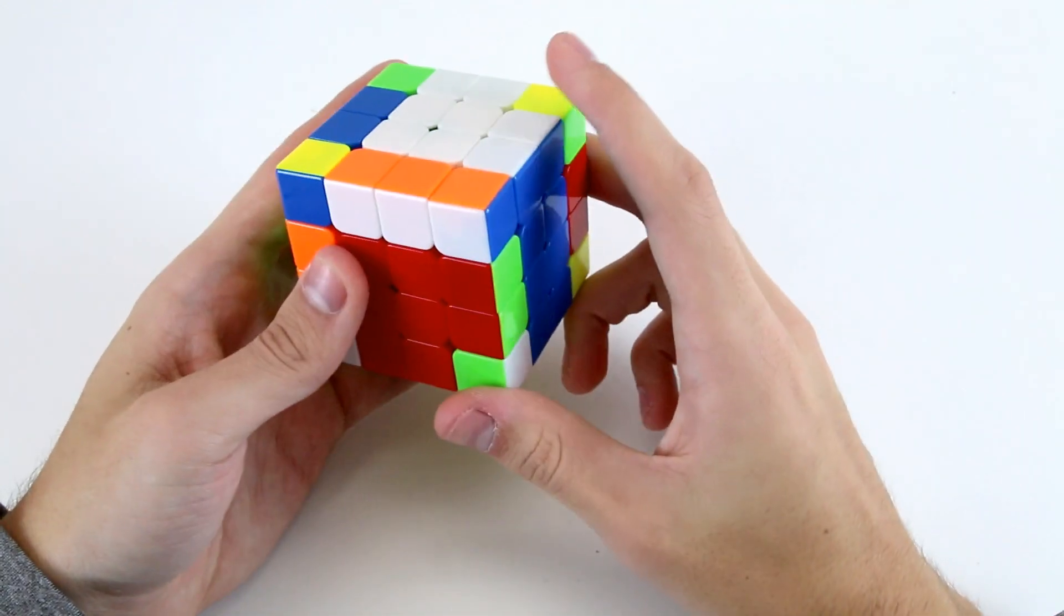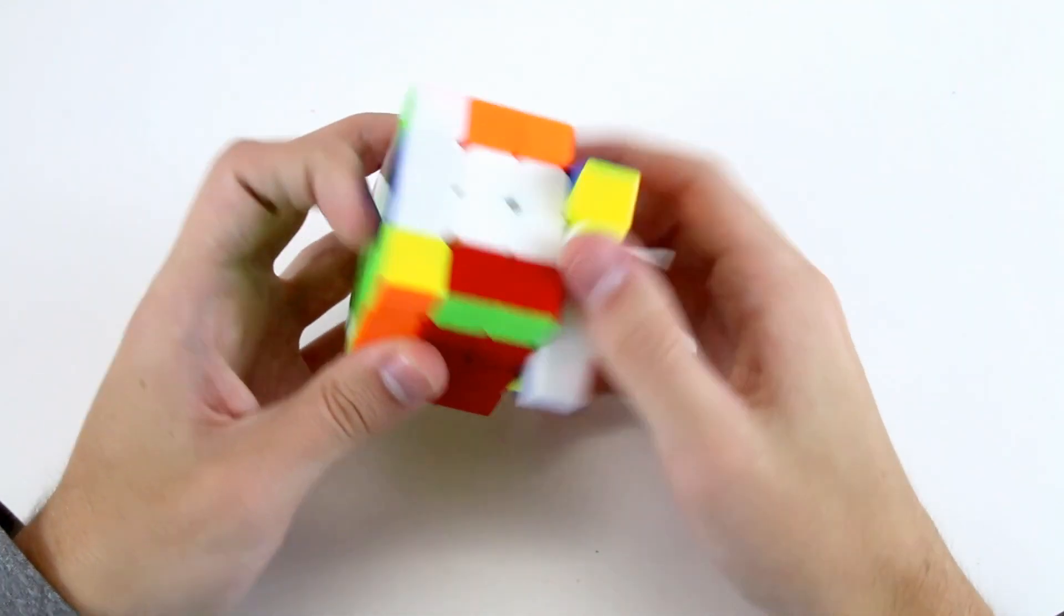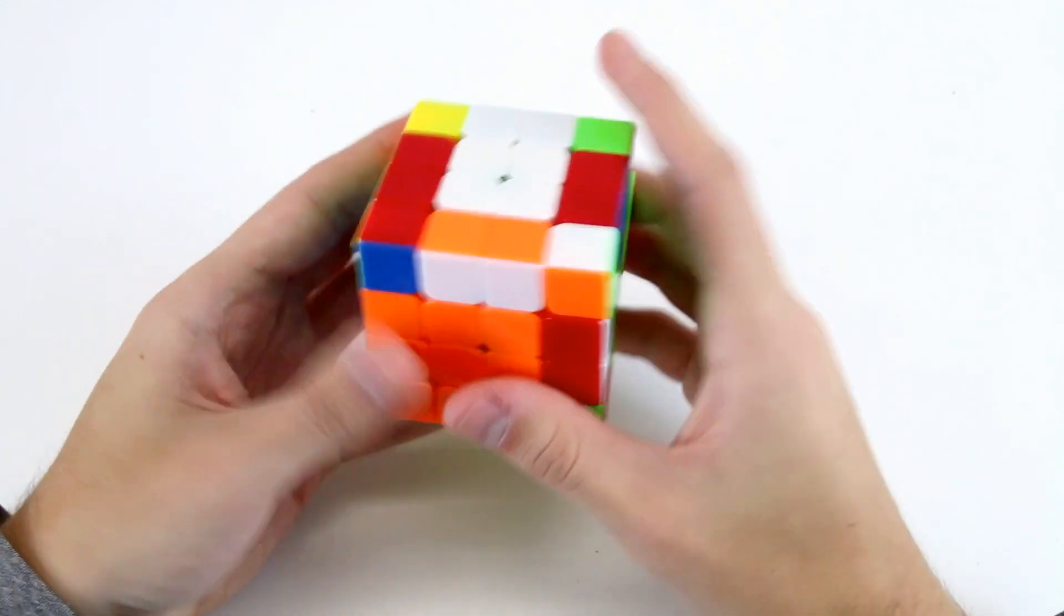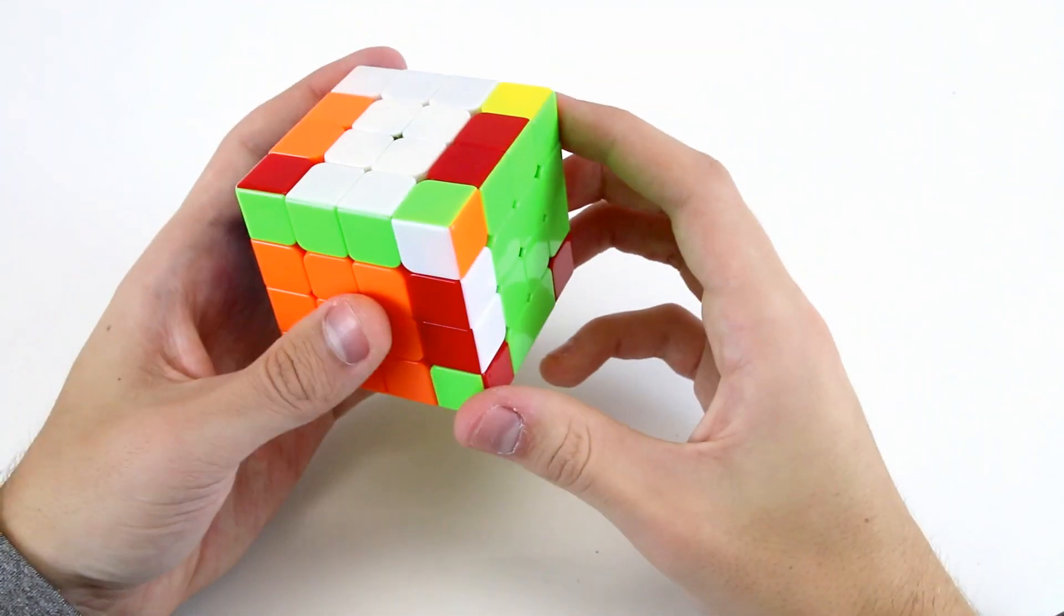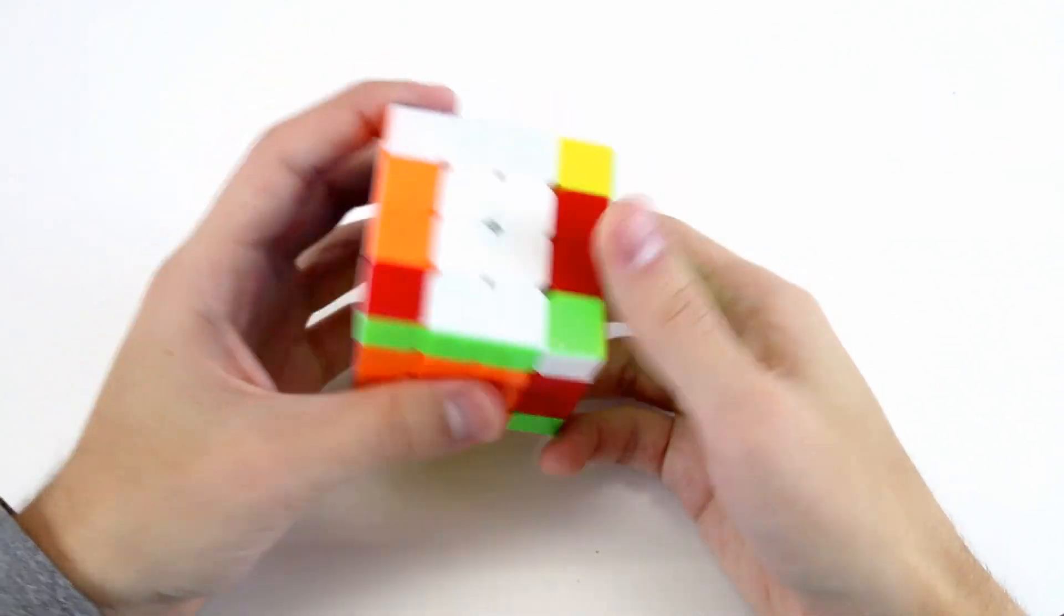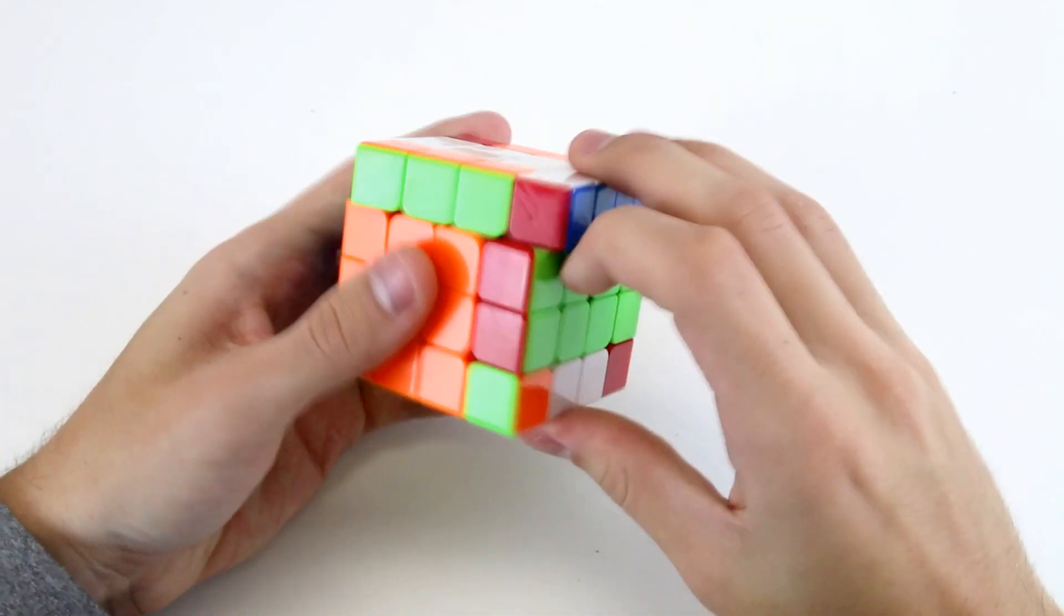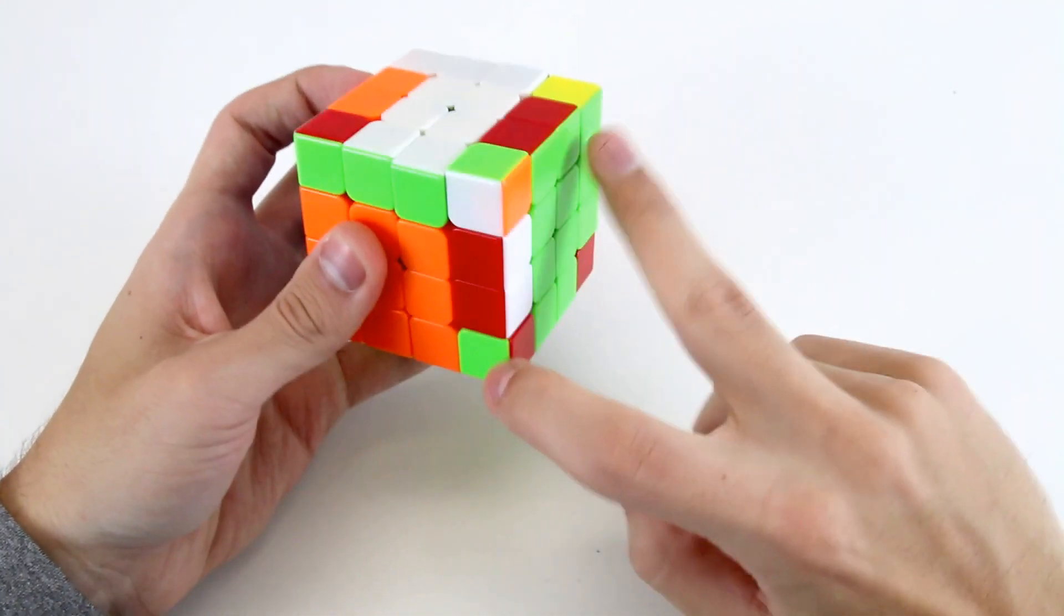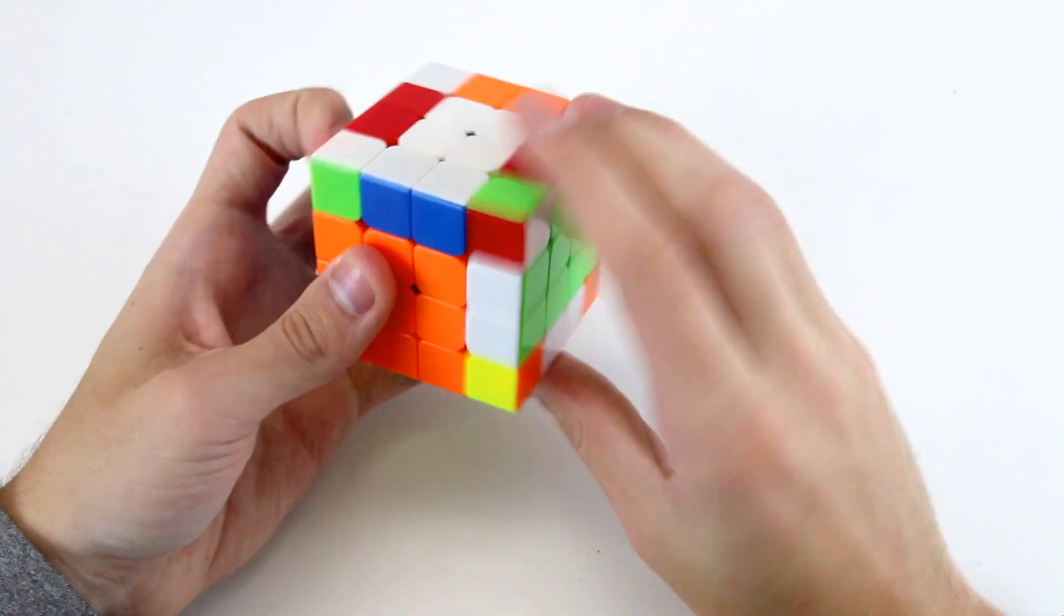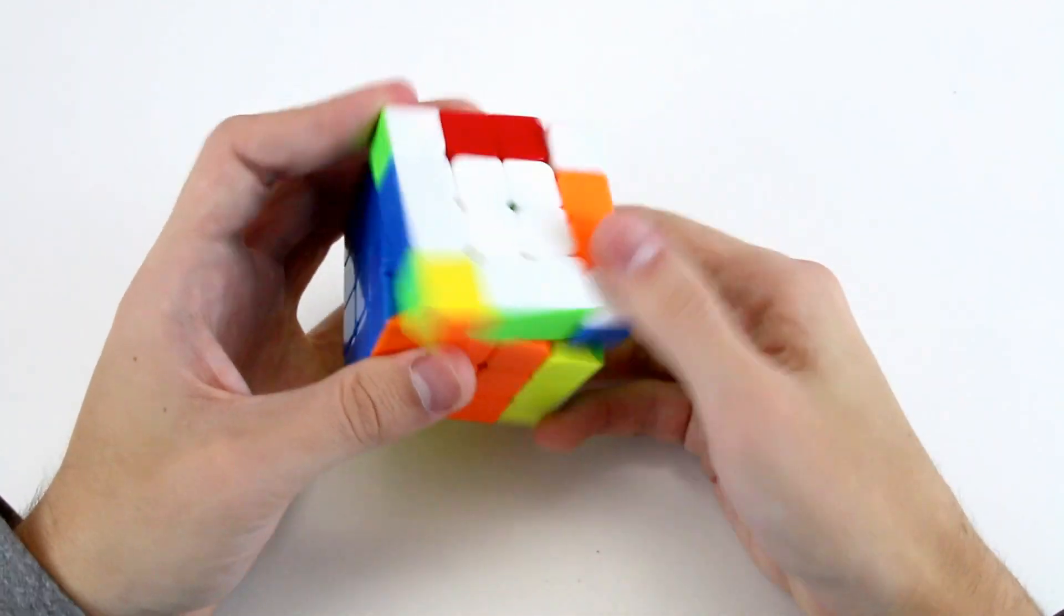I'll probably do these two first, because it's the first thing I see. These two. I see that if I insert this F2L pair like that, I'm going to get this really bad case. So what I'll do actually is insert these two into the back right slot first, and then do these two.